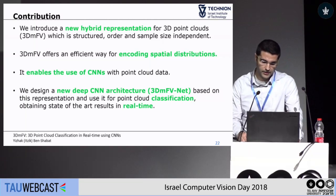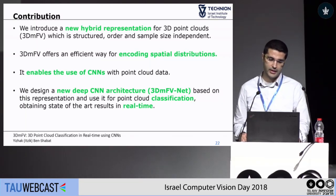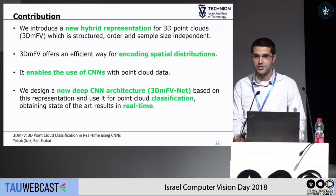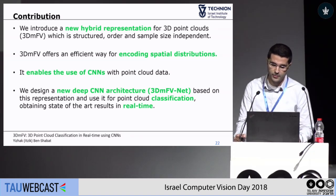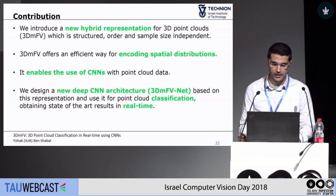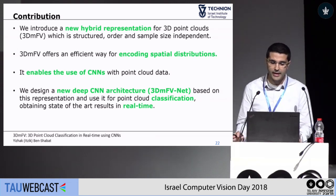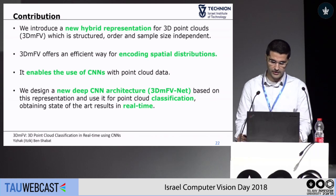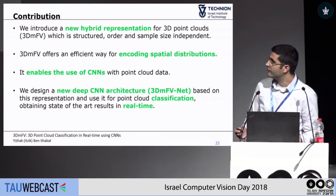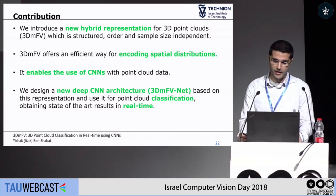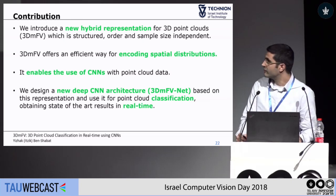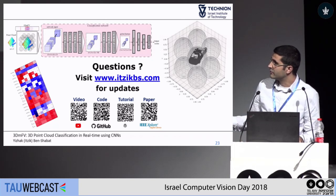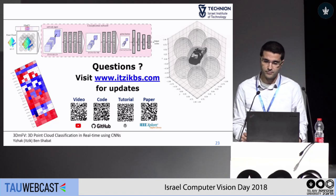To sum up: we introduced a new hybrid representation for 3D point clouds that is structured, ordered, and sample-size independent, tackling the main challenges of dealing with point clouds in deep learning. It offers an efficient way of encoding spatial distributions and enables the use of powerful 3D CNNs with point cloud data. We also designed a new deep CNN architecture called 3DMFVNet, achieving state-of-the-art classification results in real time. The code is available on GitHub.